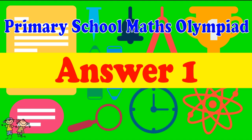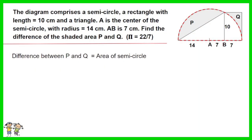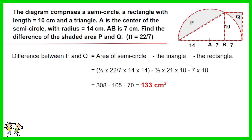Answer for question 1. The difference between P and Q is equal to the area of semicircle, minus the triangle, minus the rectangle. Work out the equations, the answer is 133 cm squared.